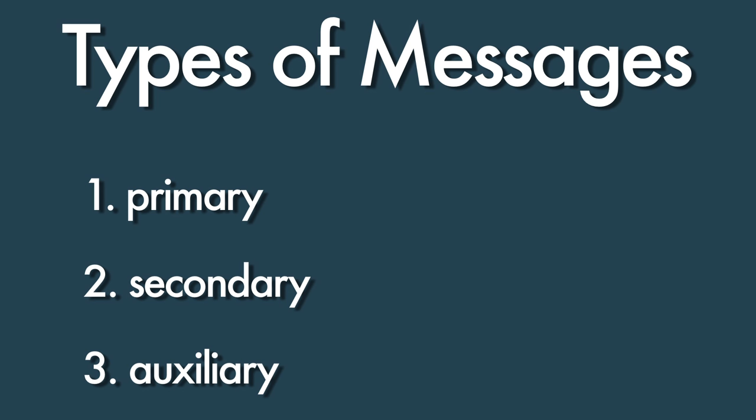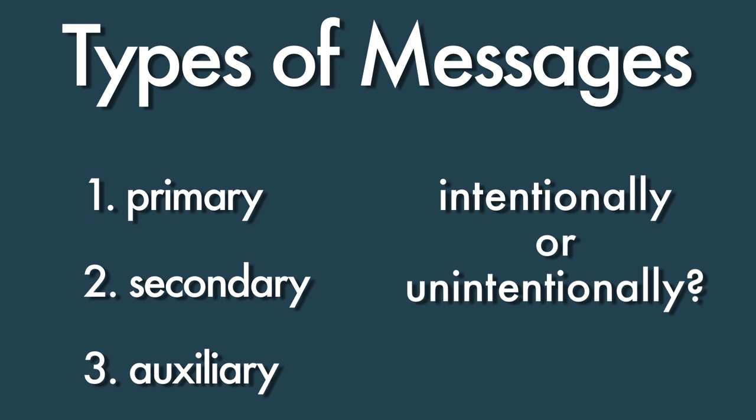These distinctions are based on whether the message was communicated intentionally or unintentionally. You will also learn about the five parts of a message: the attention statement, the introduction, the body, the conclusion, and the residual message. An effective communicator knows the options available to them so they can choose the best option given the business context. By the end of this course, you'll be able to do just that.